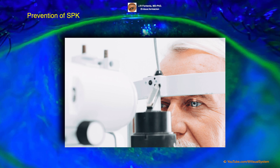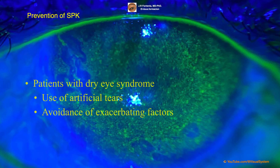Regular eye examinations are also important for detecting and treating superficial punctate keratitis early, before it causes permanent damage to the cornea. Patients with dry eye syndrome should also be educated on proper management techniques, such as the use of artificial tears and the avoidance of exacerbating factors.